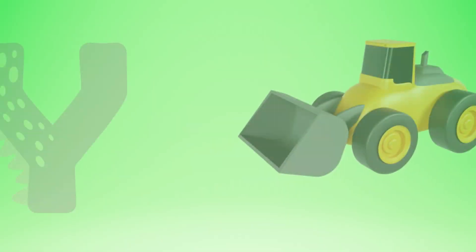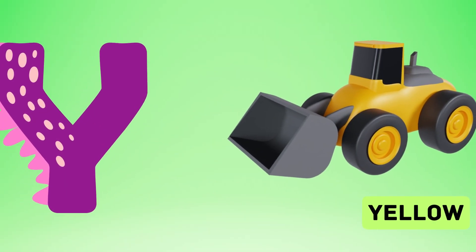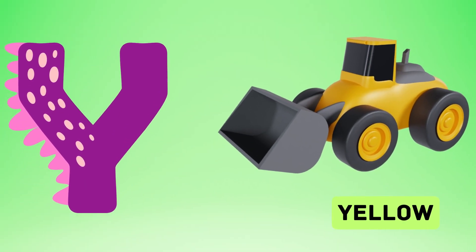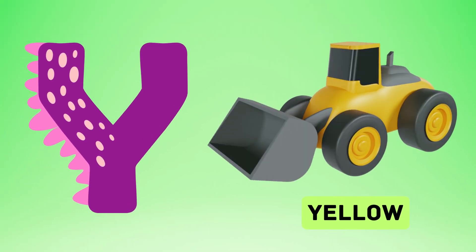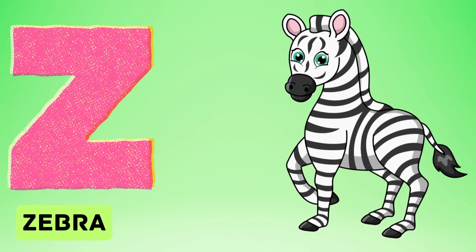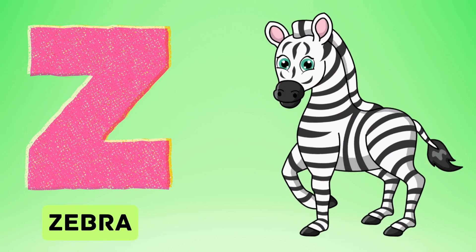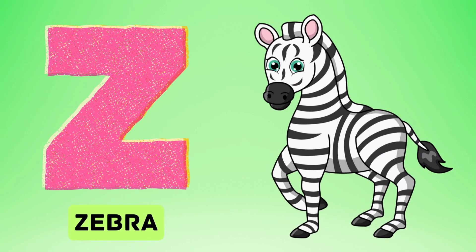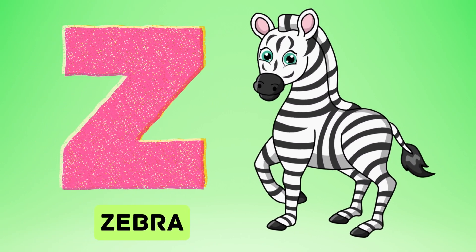Y is for yellow, ye-ye-yellow. Z is for zebra, z-z-zebra.